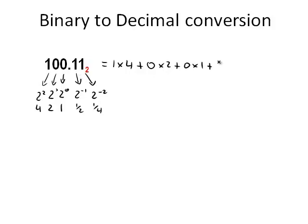The next one is 1 multiplied by a half. And the last one is 1 multiplied by a quarter. Now, since we are multiplying by 0 in a couple of cases, there's no need to write this down. So in the next example, we won't write this down.